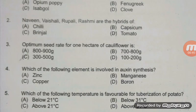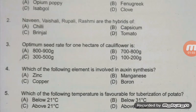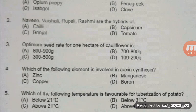Which element is involved in auxin synthesis? The right answer is A — zinc. Other than auxin synthesis, RNA synthesis also takes place via zinc. Important nutritional deficiencies: white bud of maize is due to zinc deficiency, Mars spot is due to manganese deficiency, exanthema in citrus is due to copper deficiency, and boron has a very important role in pollen germination.